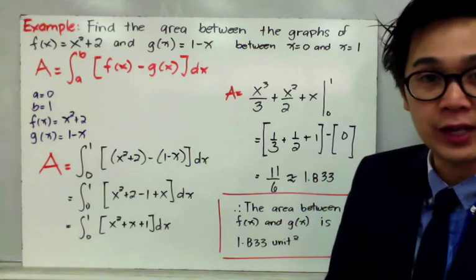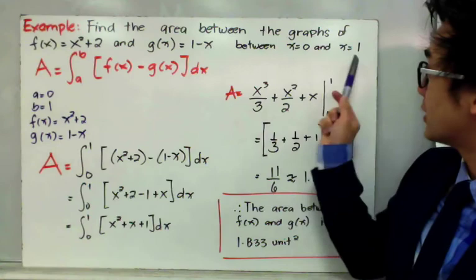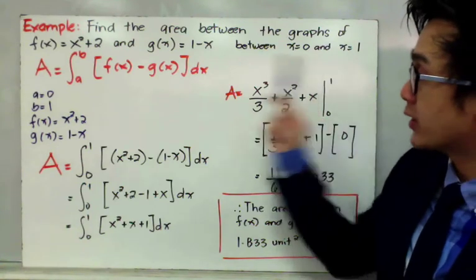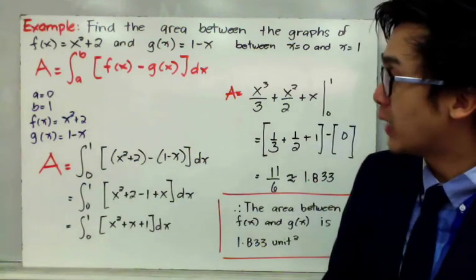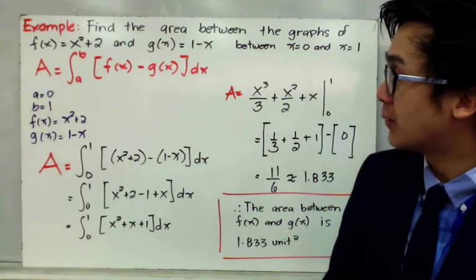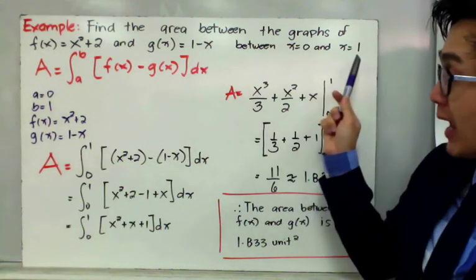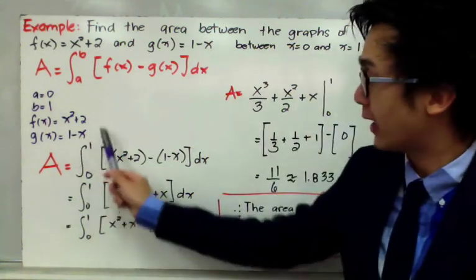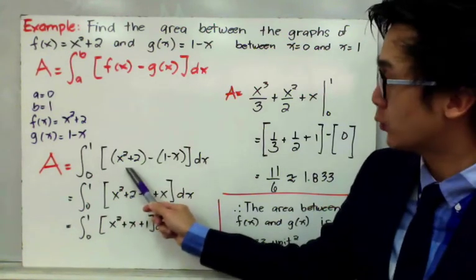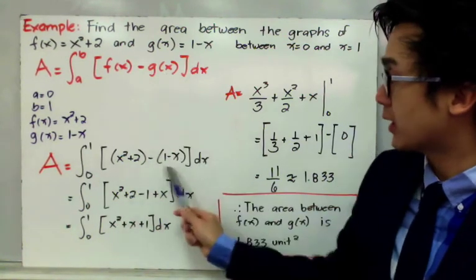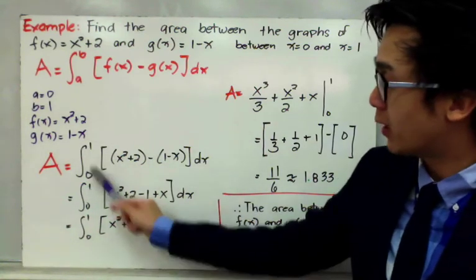We have the value of a, which is equal to 0, and the value of b, which is equal to 1, the function f(x) = x² + 2, and g(x) = 1 - x. By direct substitution, to find the area between f(x) and g(x) from x = 0 to x = 1, we'll have the integral of f(x) minus g(x) dx, which is (x² + 2) minus (1 - x) dx from 0 to 1.